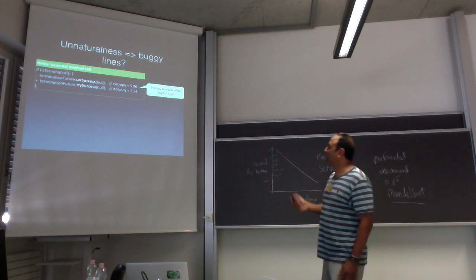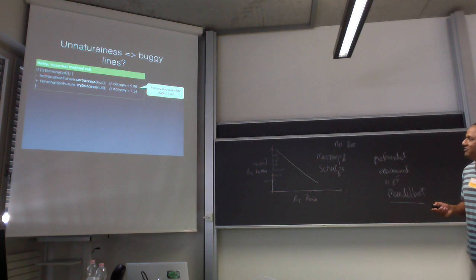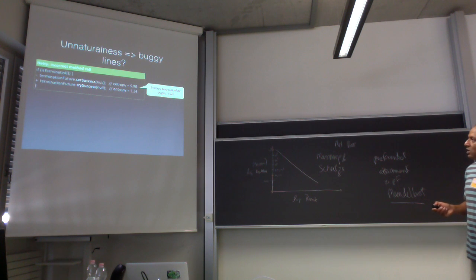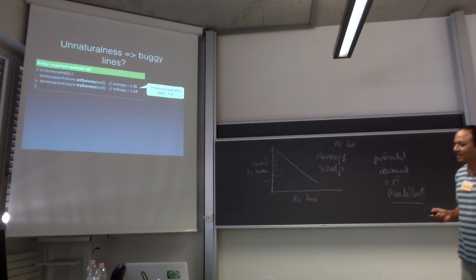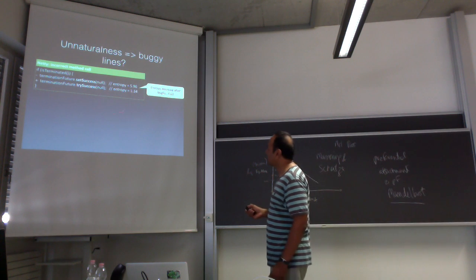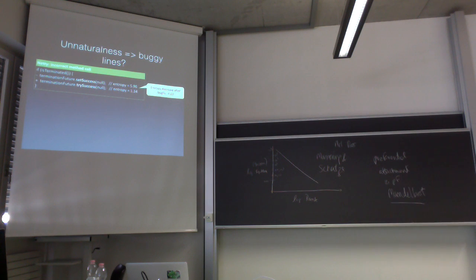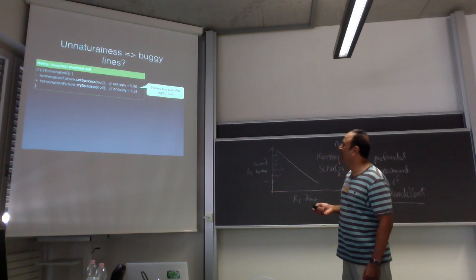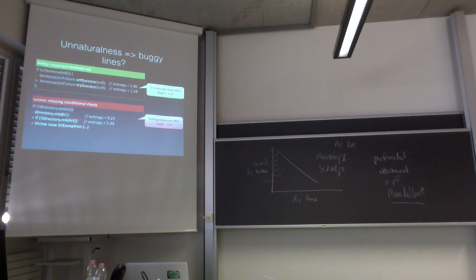Here are some examples. One bug fix involved a 'setSuccess' method call with entropy around 6 bits; after the bug fix, entropy dropped by 3.8 bits. Another example was a method called without a conditional check — in general this condition should be checked — and when they added the conditional check, entropy dropped by 3.8 bits.